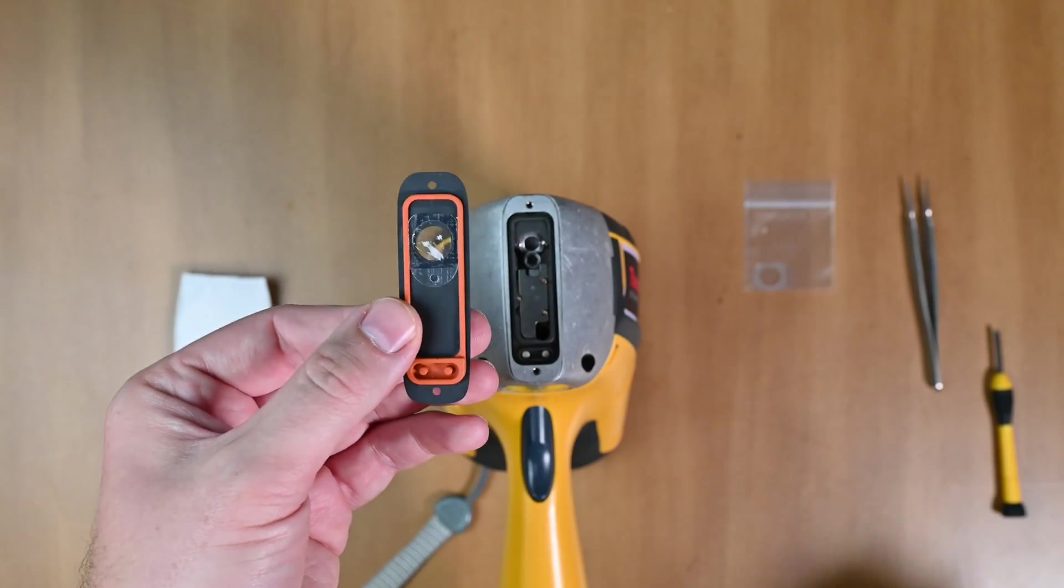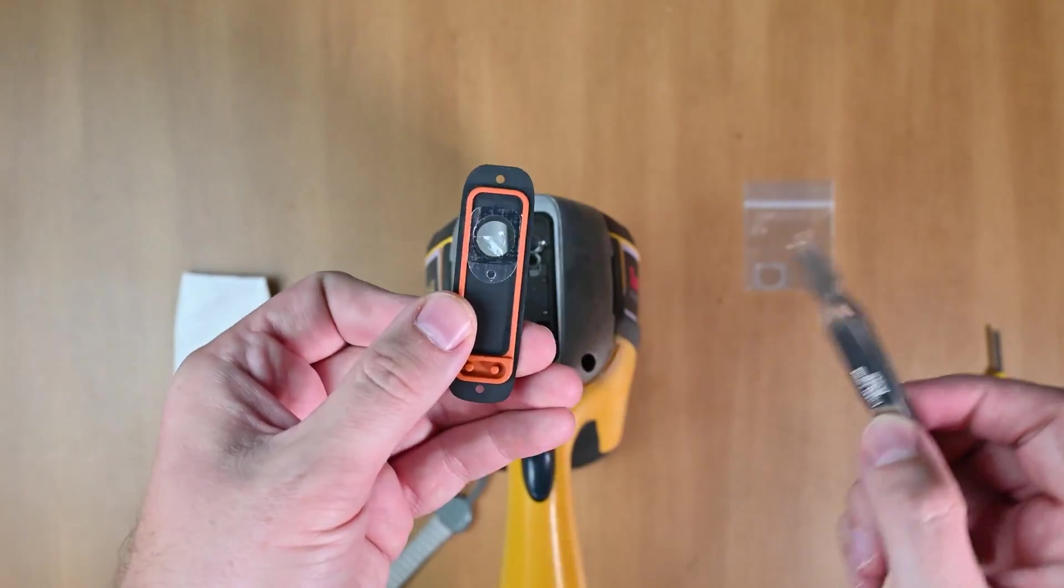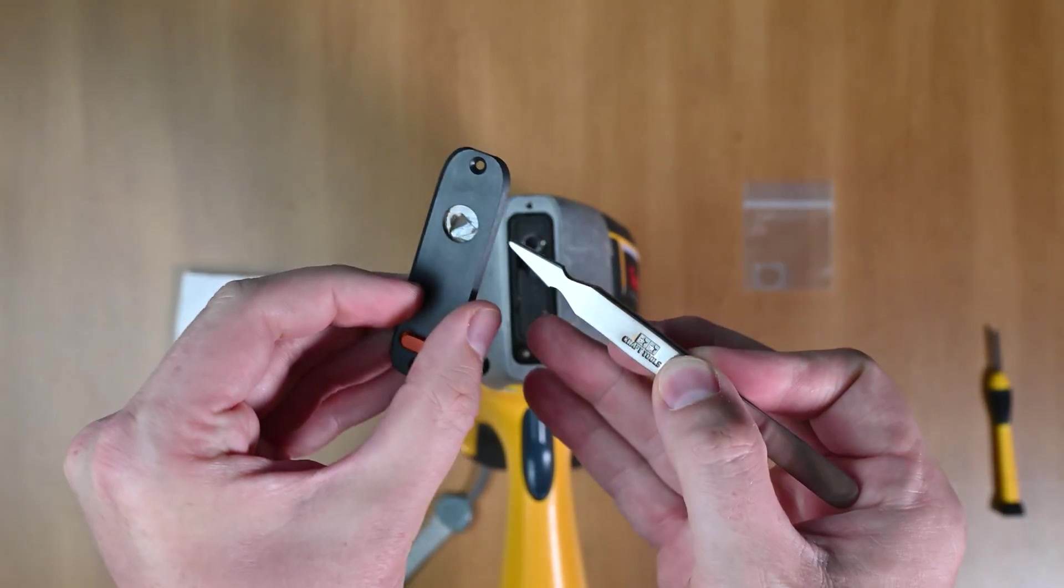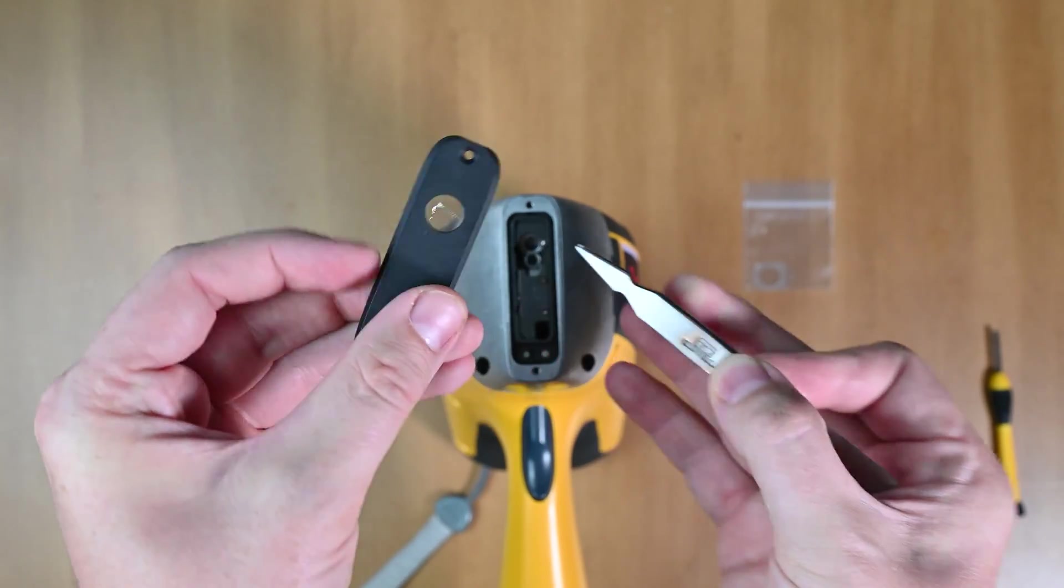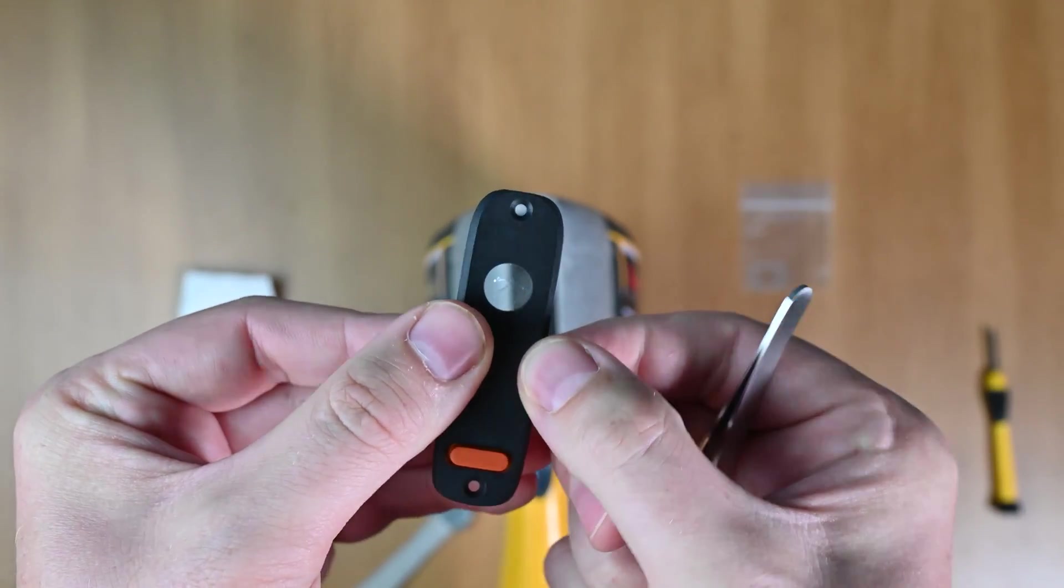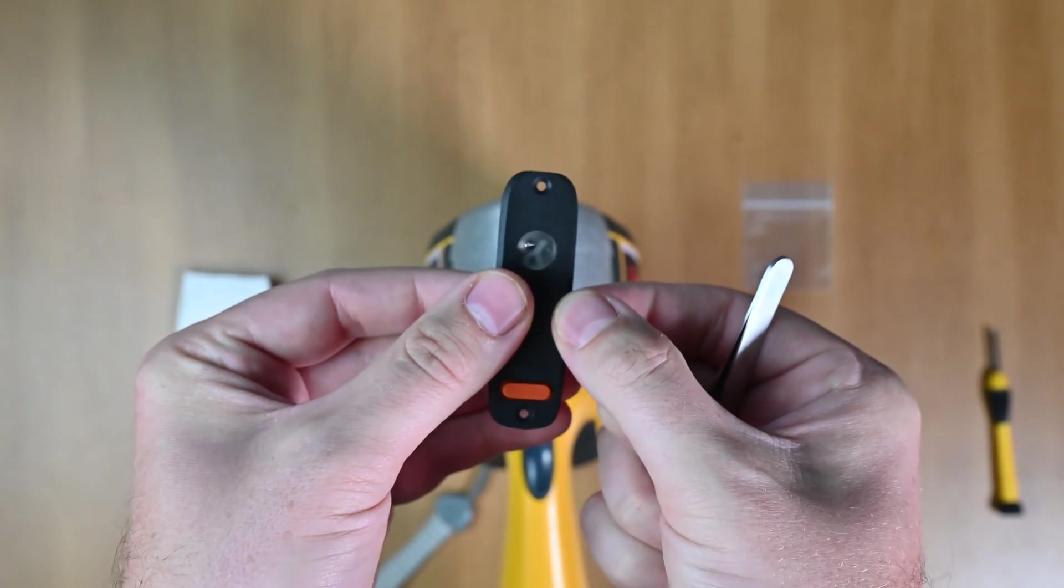So as I turn it over, you can see that the XRF window is stuck to the back of this faceplate. And you can also see that it's punctured. My tweezers go right through this window. And that's how you know that it's time to change the window.